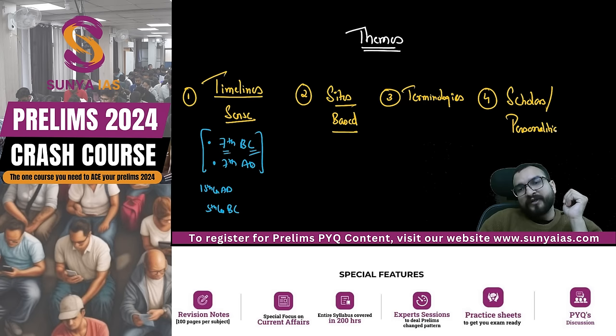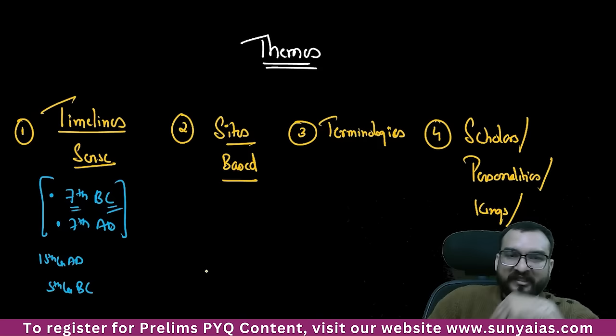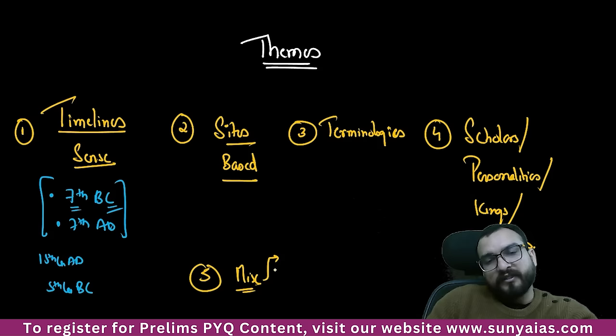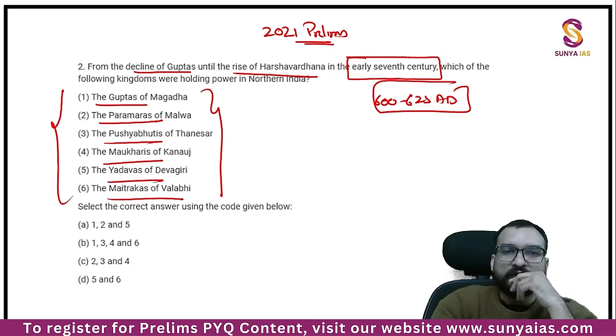Terminologies are important. The fourth important theme is scholars — you can say personalities, kings, sultans, emperors — these are very important. And the fifth is miscellaneous, where literature is being asked. Literature will be asked, any political information will be asked. Let me show you the importance of scholars and personalities: in recent years, every year you will see a question on scholars.